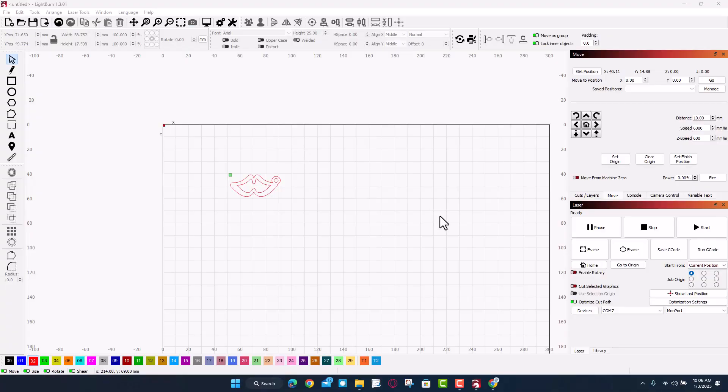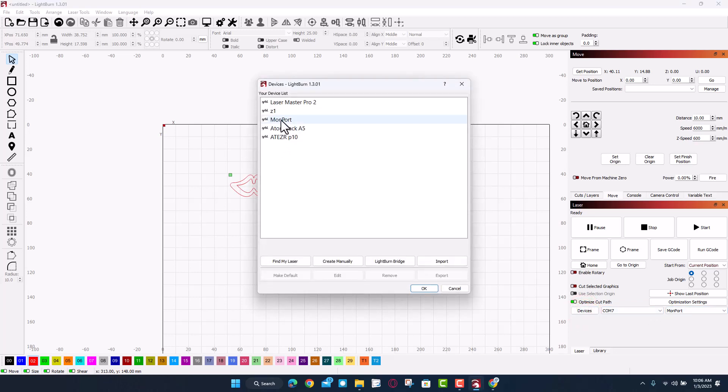All right friends, so first things first, let's check those settings. Over here I'm just going to click on devices, let's click on the Monport. You can see right here it says Gerbil serial USB 300 by 200, origin at the rear left and home on startup. I'll just show you if you hit edit.